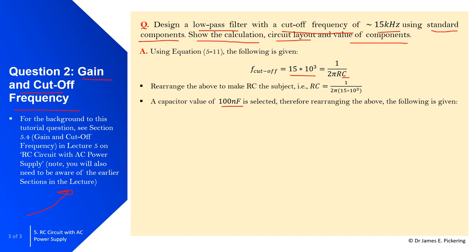Rearranging the equation to solve for the resistor, R = 1 / (2π × 15 × 10^3 × C). We've divided both sides by C, the capacitance, and substituted the selected capacitance value of 100 × 10^-9. Work that out, and you get 106 ohms.